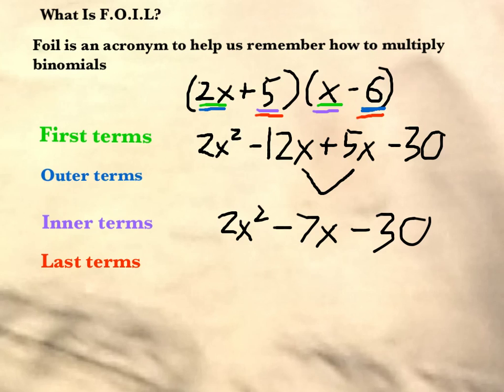So there you have it. FOIL just reminds us to multiply our first, our outer, our inner, and last terms. Sometimes we actually use that as a verb, so when we say to FOIL something, we're just saying to multiply together the binomials, and we're reminding ourselves of the rule which we use to do so.